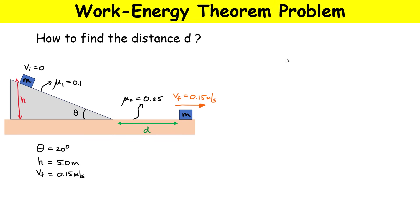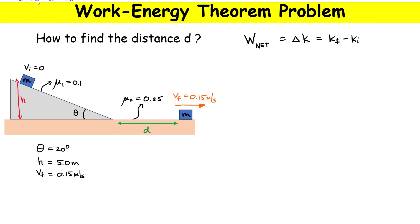We write down the work-energy theorem: the net work must be equal to the change in kinetic energy. The change in kinetic energy is always final kinetic energy minus initial kinetic energy. Right away we have a simplification — it started from rest, therefore there is no initial kinetic energy.